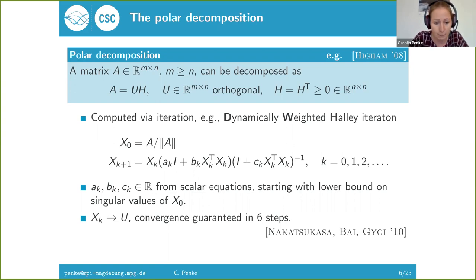A good way to compute it is, for example, the dynamically weighted Halley iteration. There are many iterations for computing this polar factor U, but this one has some nice properties. We start by normalizing A and then we can do an iteration in this form. We have these scalar parameters a, b, and c, and they can be computed from scalar equations. The nice thing about this iteration is that it guarantees that the convergence happens in just six steps.